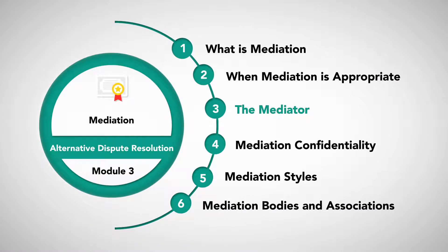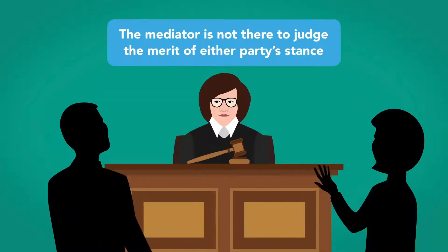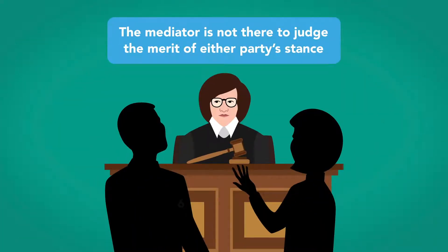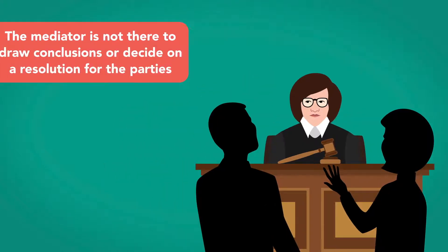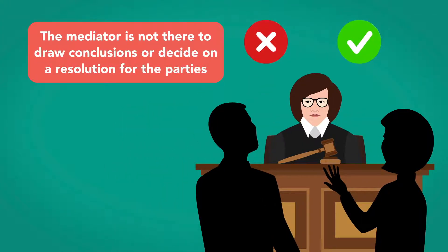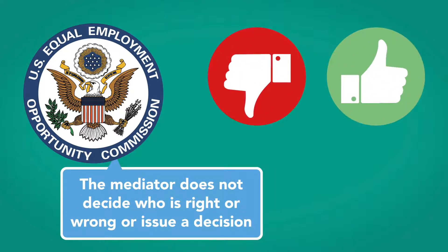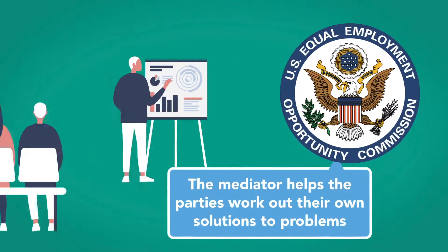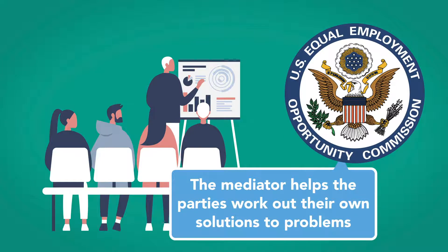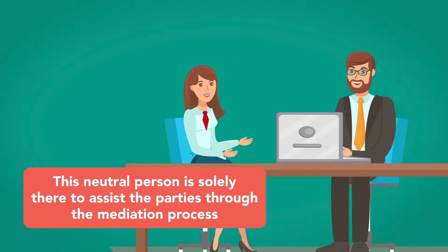The mediator is not there to judge the merit of either party's stance. In most cases, the mediator also is not there to draw conclusions or decide on a resolution for the parties. As explained by the U.S. Equal Employment Opportunity Commission, the mediator does not decide who is right or wrong or issue a decision. Instead, the mediator helps the parties work out their own solutions to problems. This neutral person is solely there to assist the parties through the mediation process.